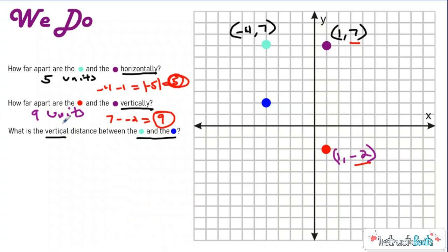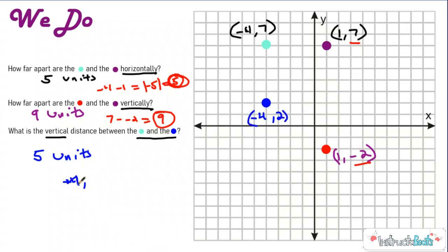This last one asks for the vertical distance between the light blue and the blue. The easiest thing is just to count them on the coordinate plane — they are five units apart. If you want to use ordered pairs: the light blue is negative four, two. Looking vertically, that's the y ordered pair. Seven minus two gives a difference of five. So they are five units apart. You can do it mathematically or on the coordinate plane.